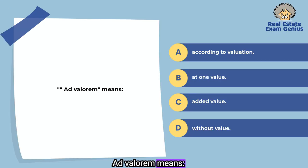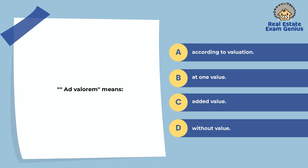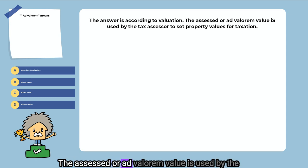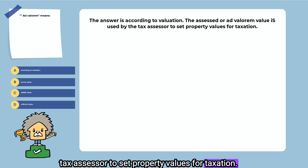Ad valorem means: according to valuation, at one value, added value, or without value. The answer is according to valuation. The assessed or ad valorem value is used by the tax assessor to set property values for taxation.